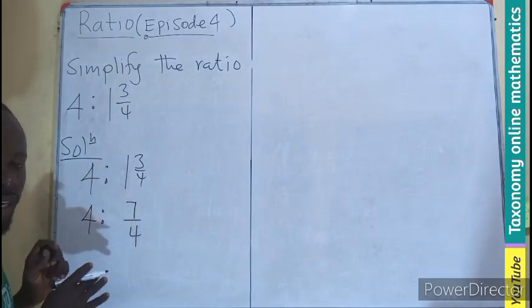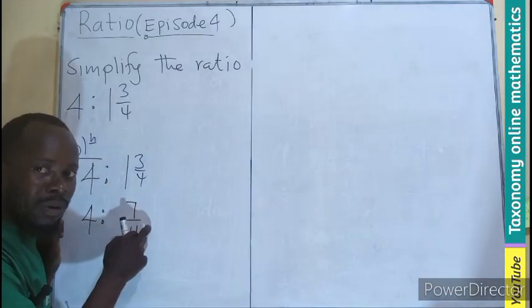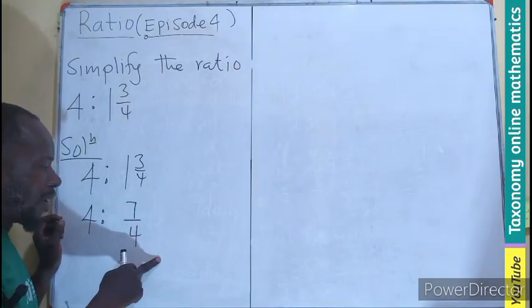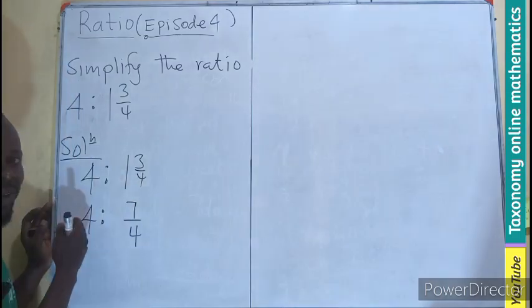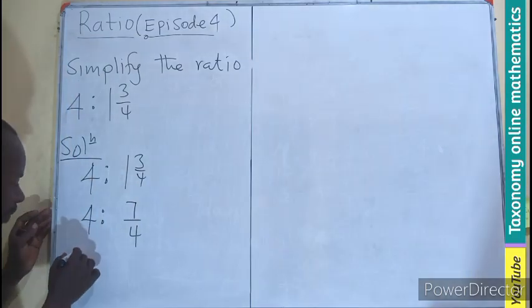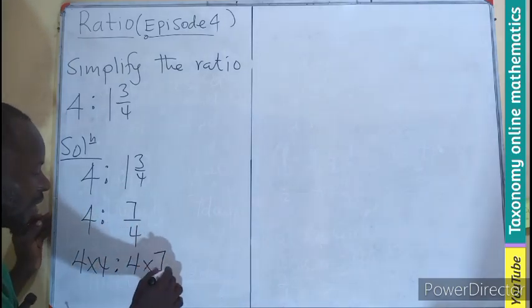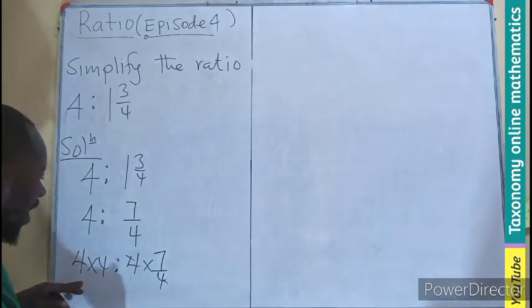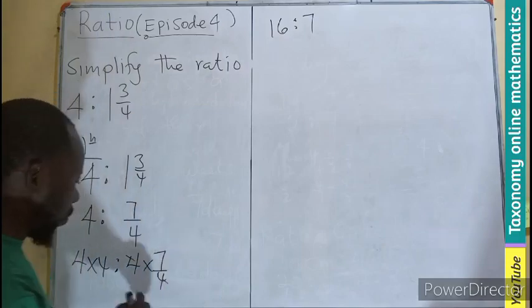We will maintain it as a ratio in this form. We can clear the fraction here by multiplying by 4. If I multiply here by 4, I will clear the fraction, but don't forget there are two sides. So as I multiply here by 4, I must also multiply here by 4, meaning 4 times 4 is to 4 times 7 on 4.